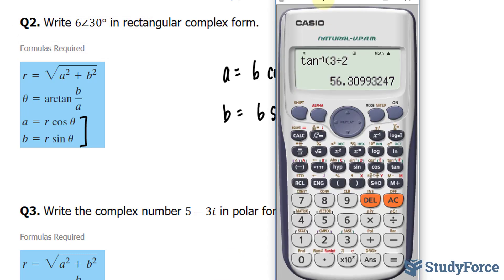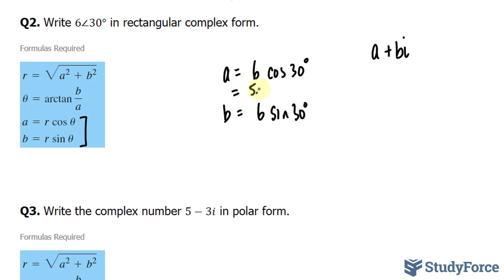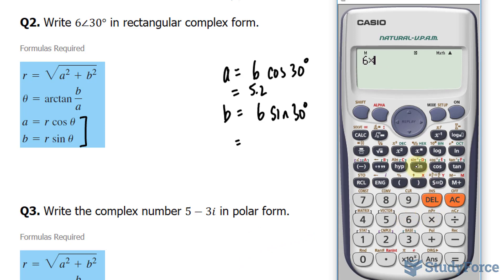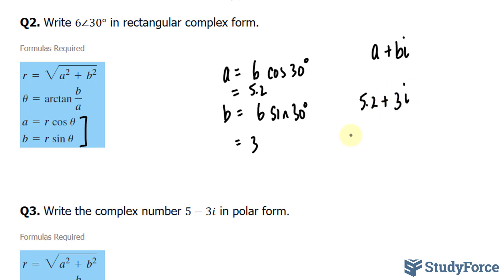Let's use our calculator. 6 times cosine 30 gives us approximately 5.2. For our b value, 6 times sine 30 gives us 3. So our final answer is 5.2 plus 3i. If we plot this, the point corresponds to 6 at an angle of 30 degrees, which is around here, and that represents the following point.